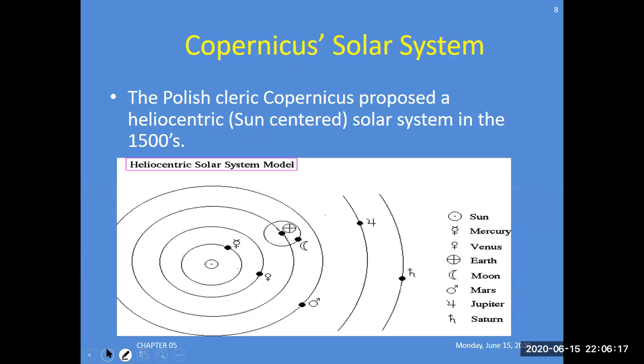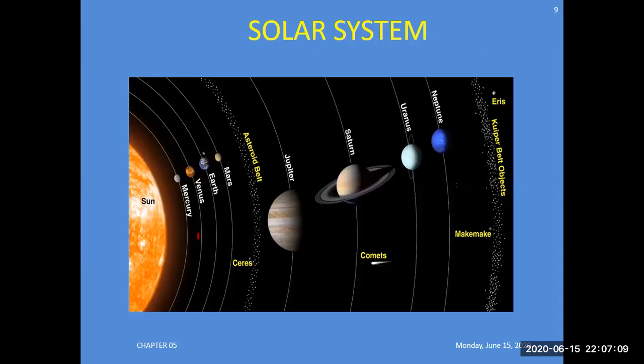Copernicus's solar system: the Polish cleric Copernicus proposed the heliocentric, sun-centered system about 1500. In this theory, the center of the solar system was the Sun, with Mercury, Venus, Earth, Moon, Mars, Jupiter, Saturn, and beyond. The solar system includes Sun, Mercury, Venus, Earth, Mars, Jupiter, Saturn, Uranus, Neptune, and Kuiper Belt objects.